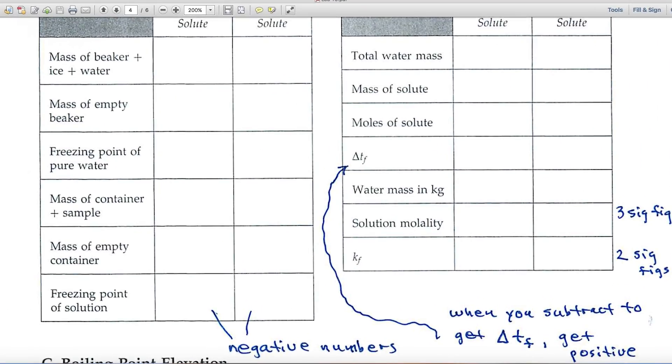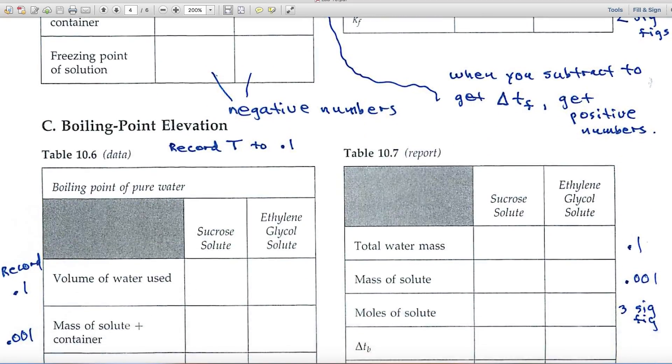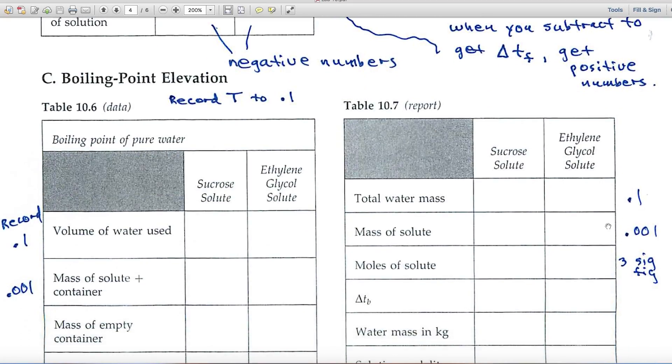Let me adjust that. Part C deals with boiling point elevation. So again, temperatures, you'll want to record to the tenth.